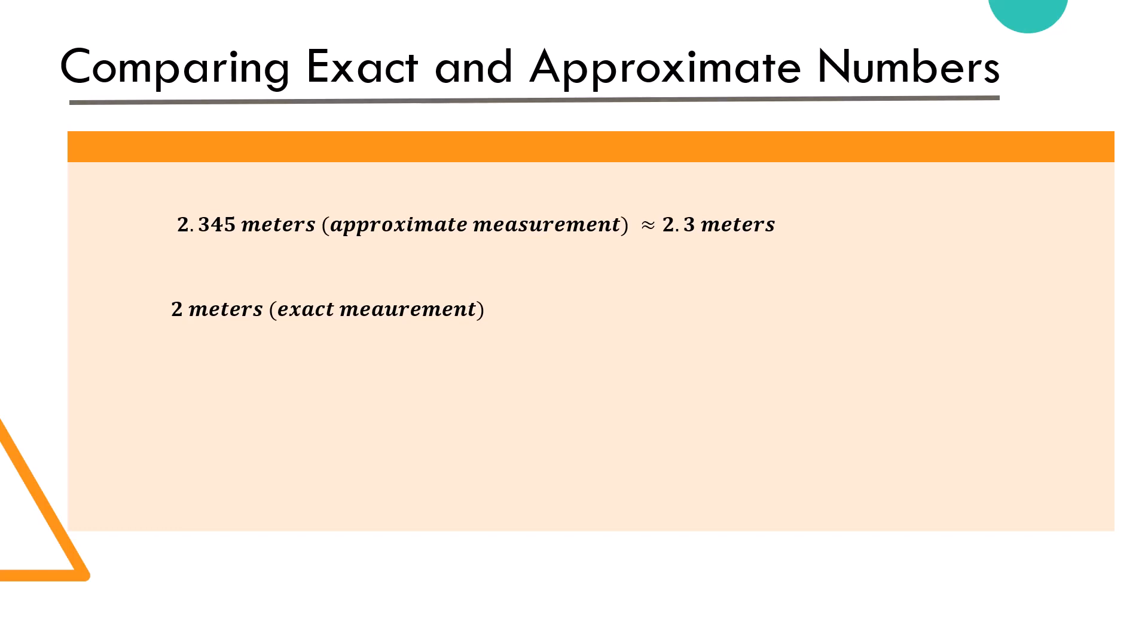These numbers are often used in situations where a precise value is not required or is difficult to determine. For instance, if we have a measurement of 2.345 meters and we round it to 2.3 meters, it becomes an approximate number.